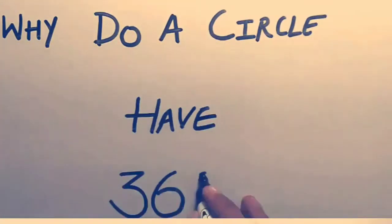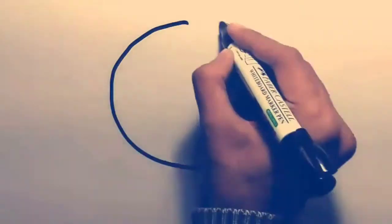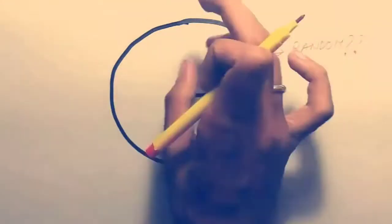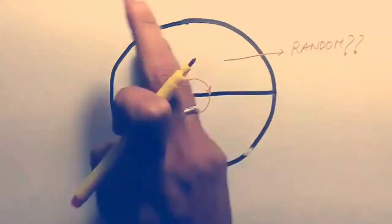Why does a circle have 360 degrees? It's kind of weird that a circle has 360 degrees. At first thought, it seems like a random number. But why not 100 or 400?